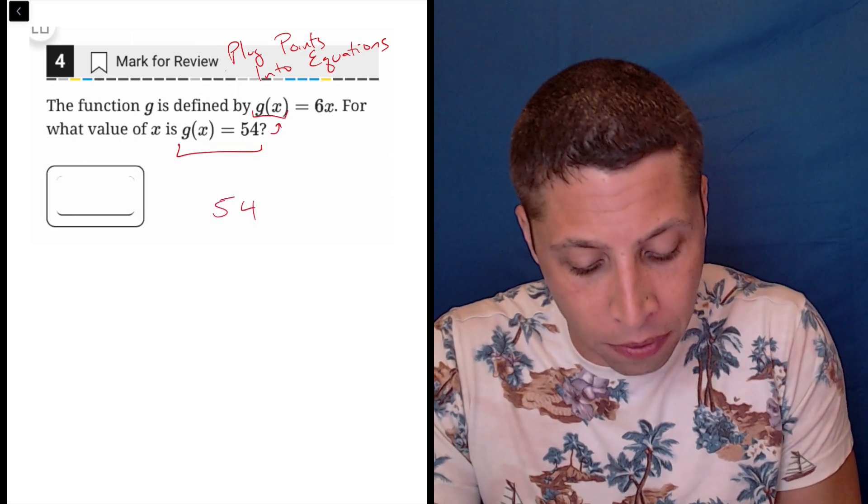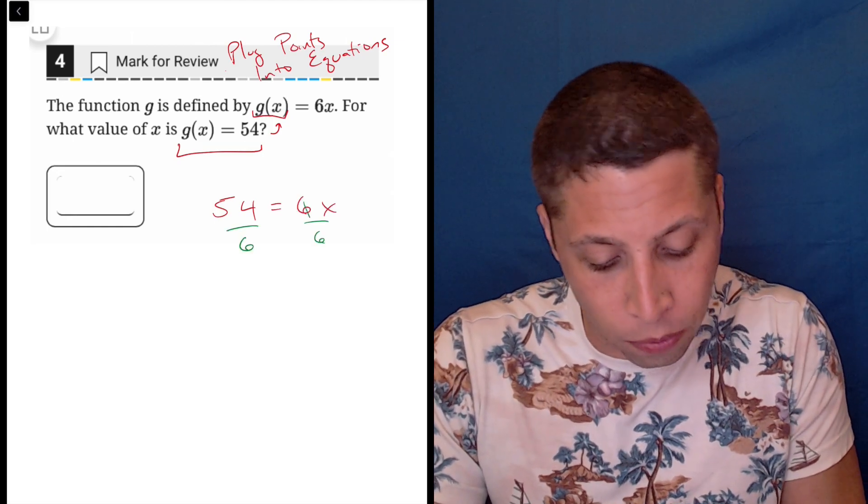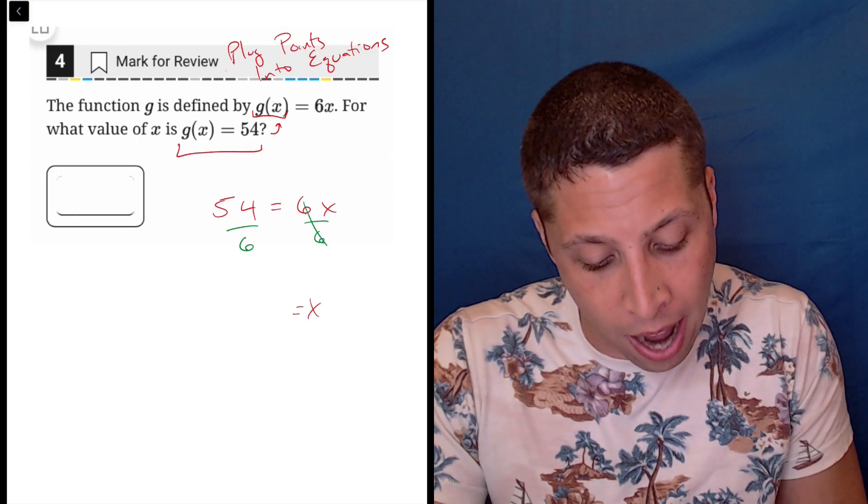So our equation should be 54 equals 6x, and then we can just divide by 6 to find that x is 9. And that is our answer.